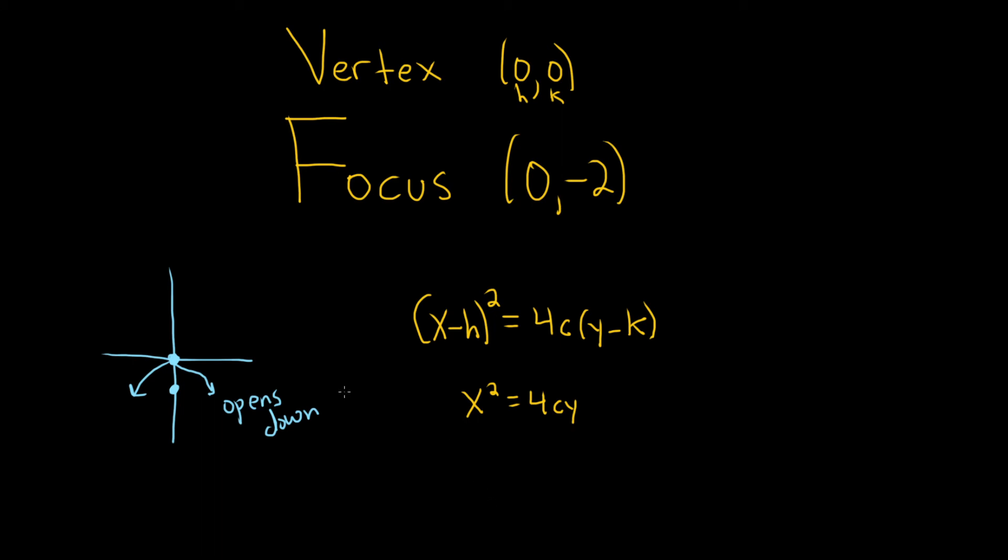Now because the parabola opens down, c is less than 0 and this distance here is actually always equal to the absolute value of c. So because the focus is negative 2, this is negative 2. And so the distance between 0 and 2 is 2. So the absolute value of c is equal to 2. But because it opens down, c must be equal to negative 2.